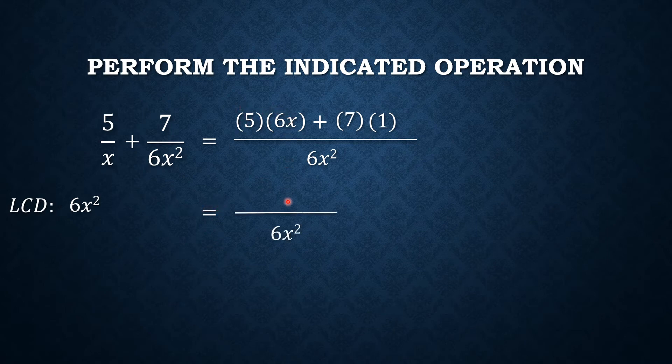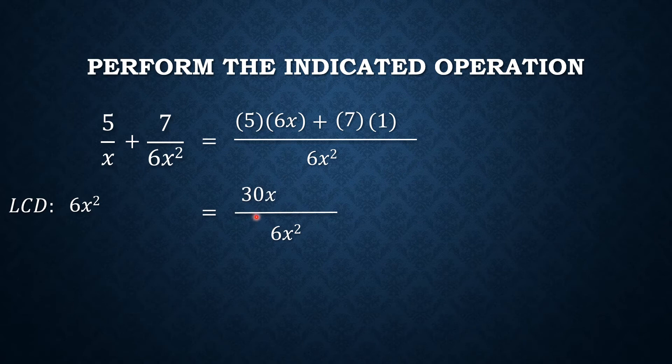So 5 times 6x is 30x and then 7 times 1 is 7, all over 6x squared. So therefore, the sum of these two rational expressions is 30x plus 7 all over 6x squared.